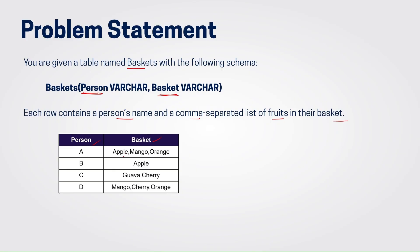For person A, we can see apple, mango, and orange. For person B, we can see apple. For person C, we can see guava and cherry in his basket. And similarly for person D, mango, cherry, and orange.